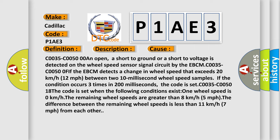C0035-C00500FF: The EBCM detects a change in wheel speed that exceeds 20 kilometers or 12 miles per hour between two 10 millisecond wheel speed samples. If the condition occurs three times in 200 milliseconds, the code is set. C0035-C005018.